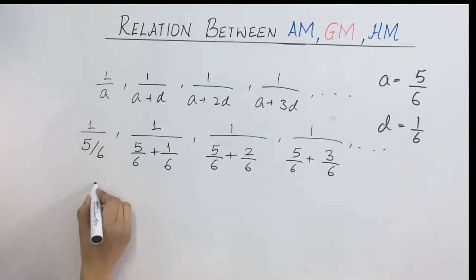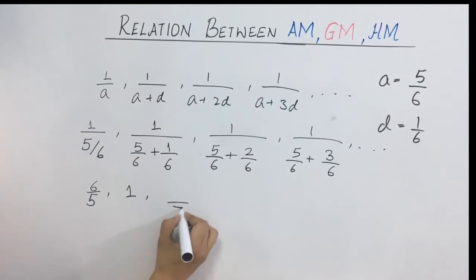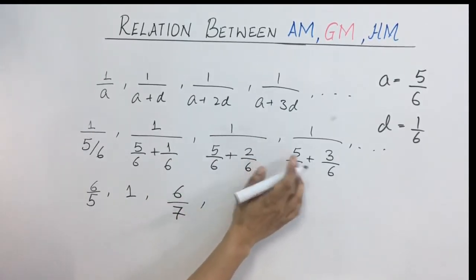Here this value will be 6 upon 5. 5 plus 1 is 6, 6 by 6 is 1. Next term, 7 by 6, 6 goes up. Next case, 8 by 6, 6 goes up and so on. So what we have done here is, we were given only 2 terms and with those terms we found equations. From that, we found the values for A and D. And from that, we found our HP.